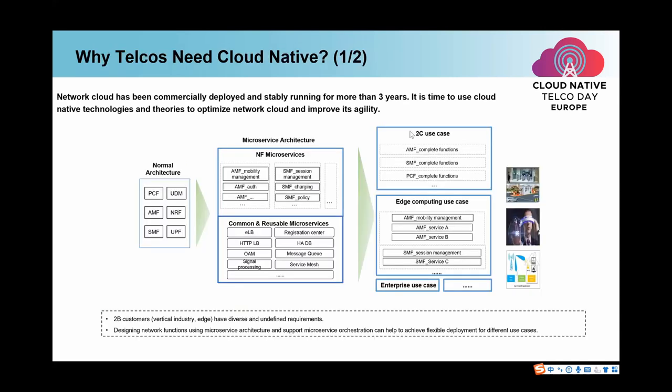After introducing the basic info of our network cloud, let's look at the motivation for telco operators evolving towards cloud native. As the network cloud has been commercially deployed and stably running for more than three years, the next thing that comes to mind is that we should do some optimization. After seeing many successful cases of IT cloud native evolution, we think it is time for telcos to use cloud native technologies and theories to optimize the network cloud and improve its agility.